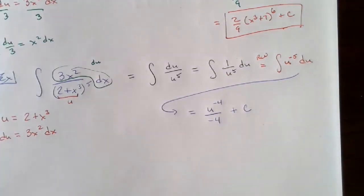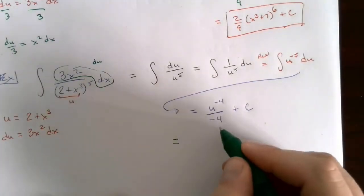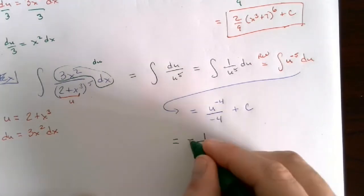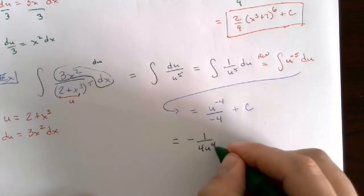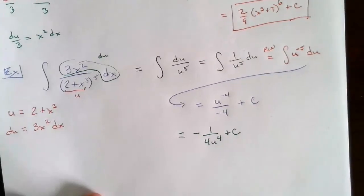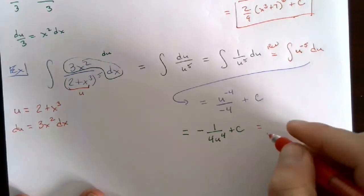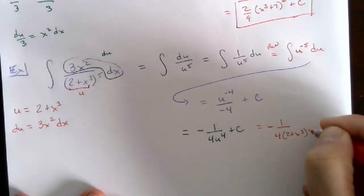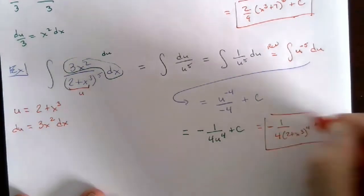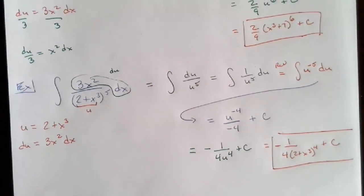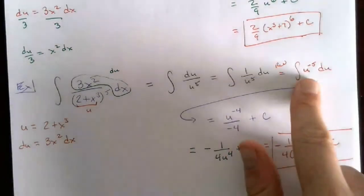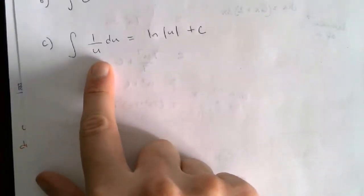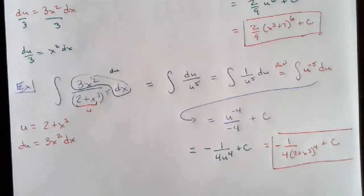Simplifying: u^(-4) in the numerator moves to the denominator as u^4, giving −1/(4u^4) + C. Back-substituting u = 2 + x³: the answer is −1/[4(2 + x³)^4] + C. The key point: when you have u^5 in the denominator, rewrite as u^(-5) — do not take the natural log, which only applies when the denominator is u to the first power.